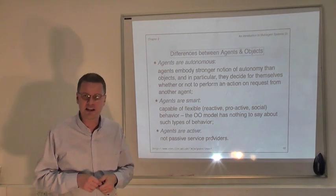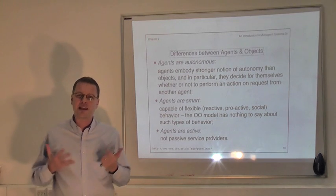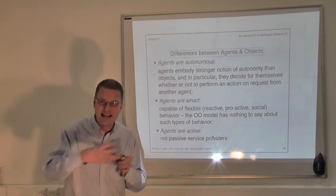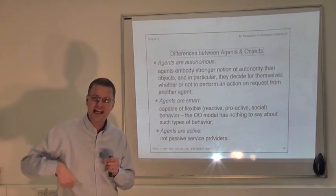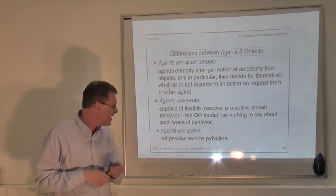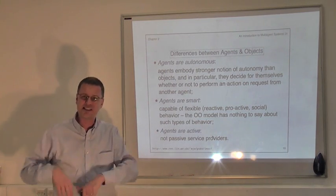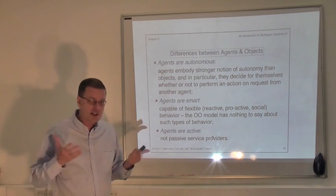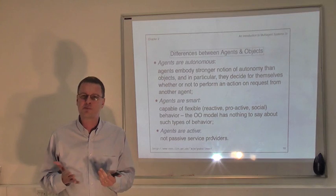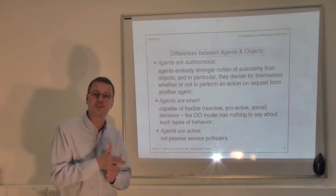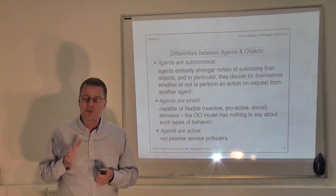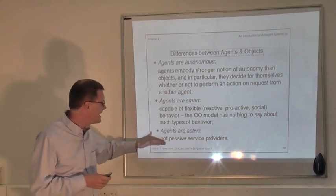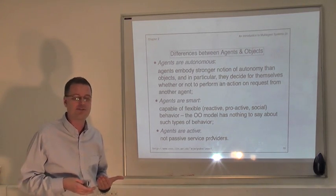Finally, as described in previous videos and earlier parts of the book, we think about an agent being in a closely coupled loop with its environment — performing a sense, decide, act loop, continually going around that loop. So agents are active entities, continually deciding what to do next, what is the next action to perform. Whereas with objects, we think of them as service providers — not doing anything until somebody invokes a method on them. In contrast, agents are active things.